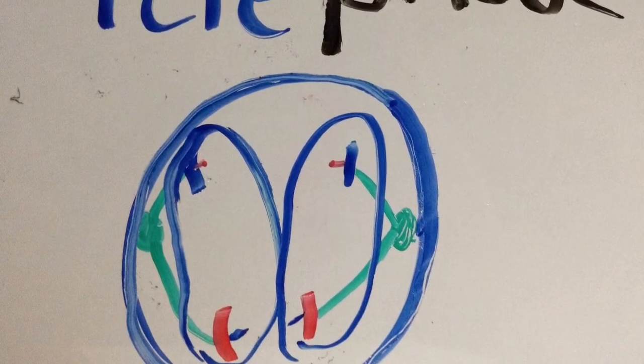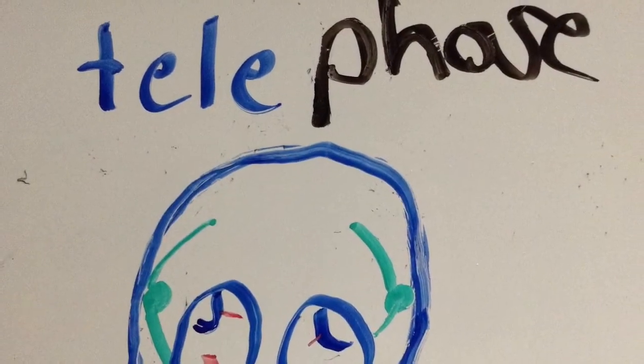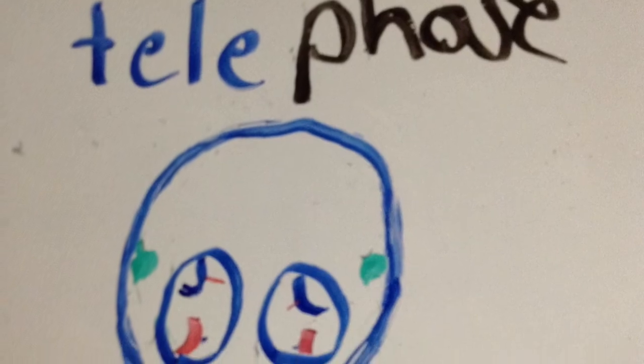After anaphase comes telophase. The chromosomes have no choice but to stay, so what forms around it will be the new cell membrane. They move back and form a new nucleus, and the spindle fibers break down.